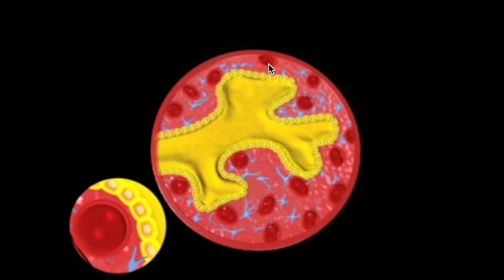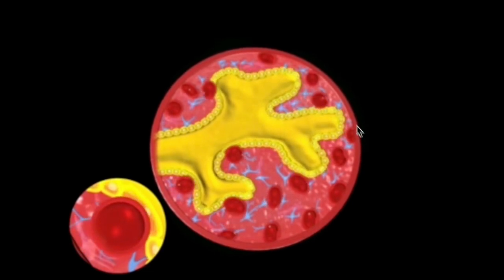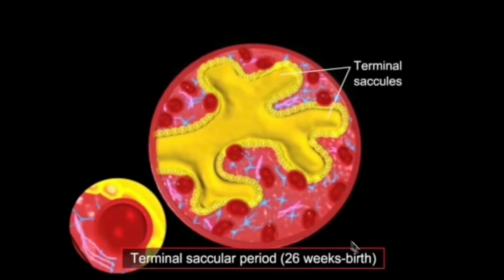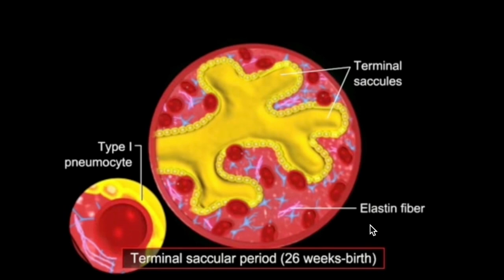During the terminal sac period from week 26 up to birth, more terminal sacs bud off the respiratory bronchioles, which increases surface area for gas exchange. The capillaries are now visibly inching closer to the terminal sacs, establishing the very important blood-air barrier.